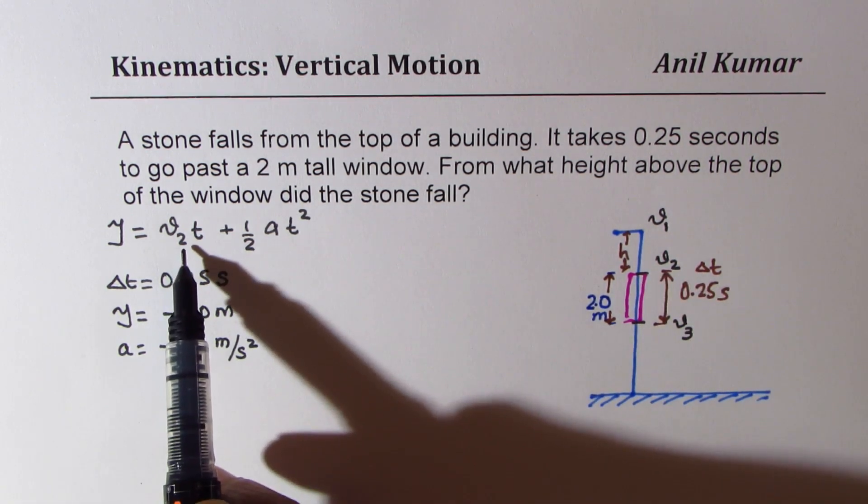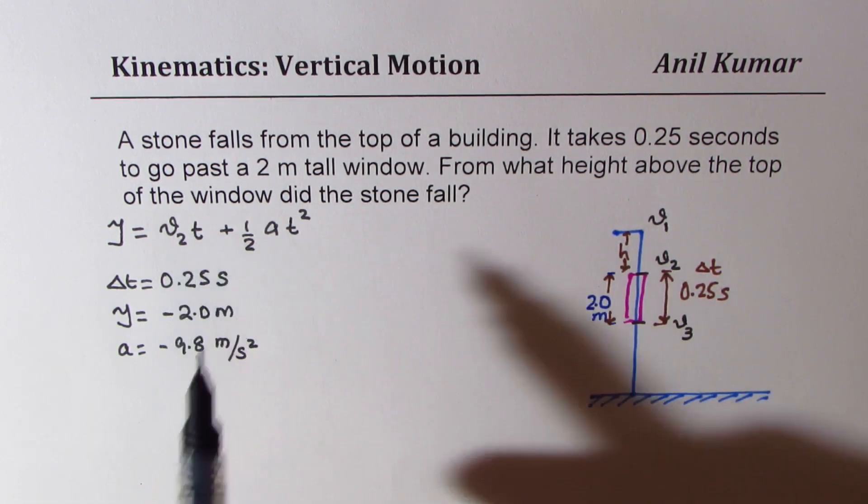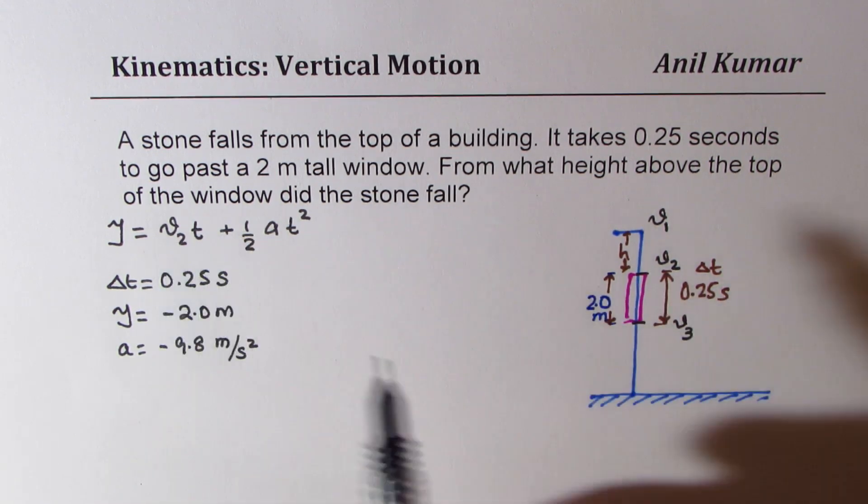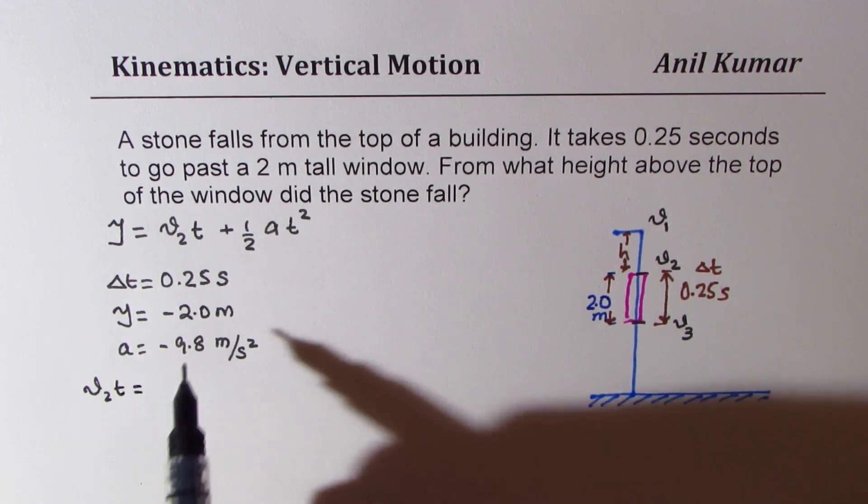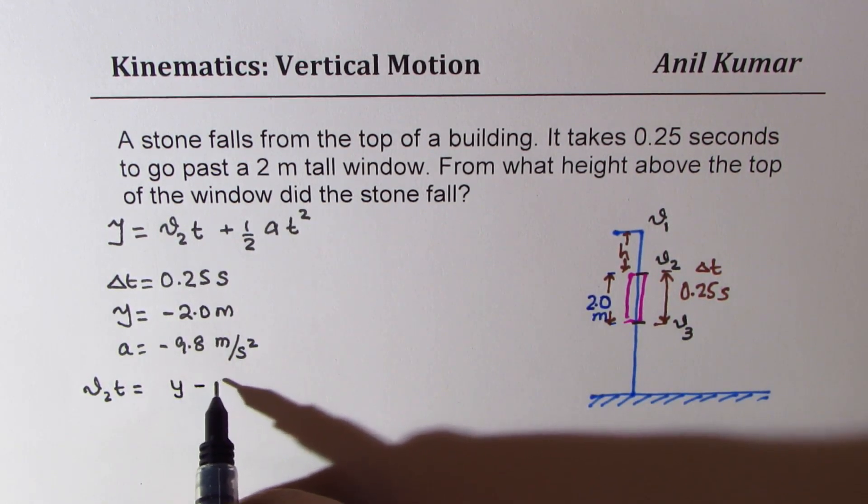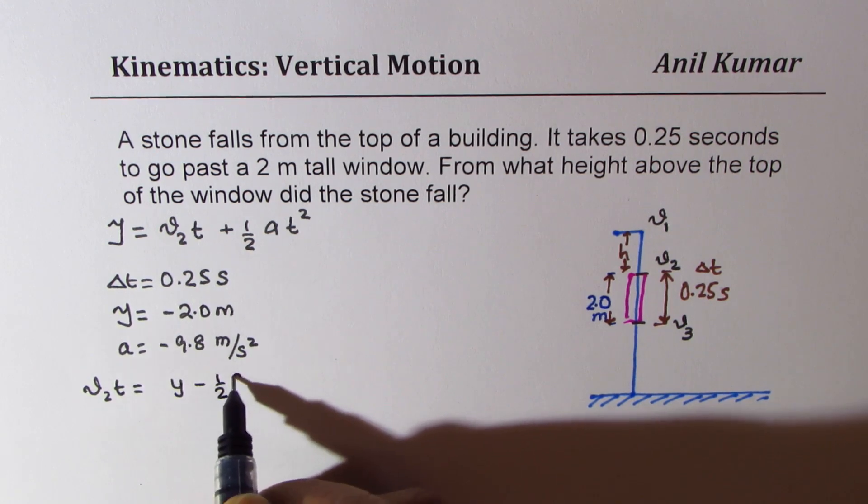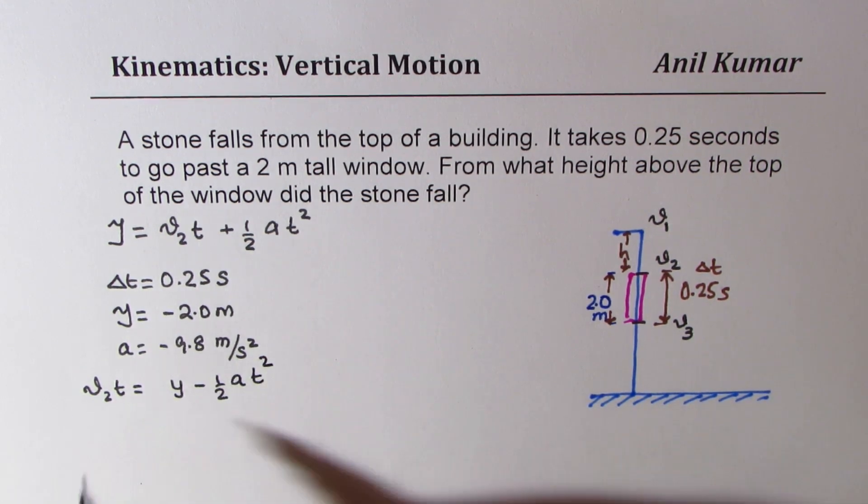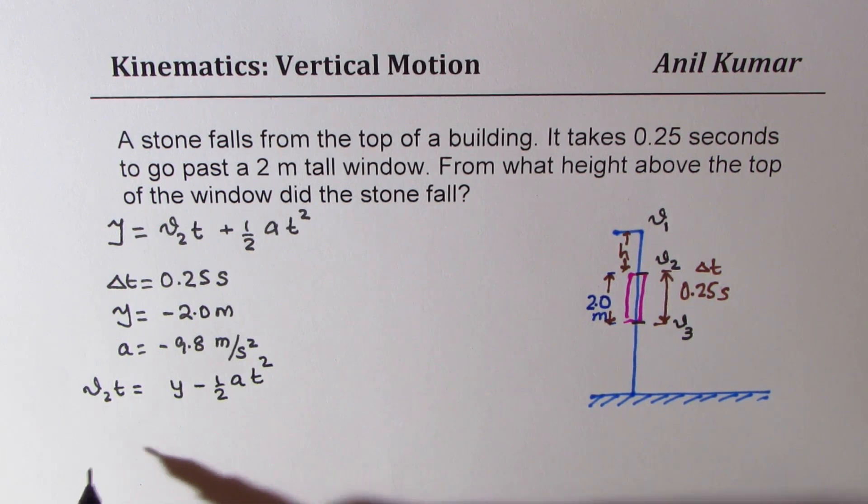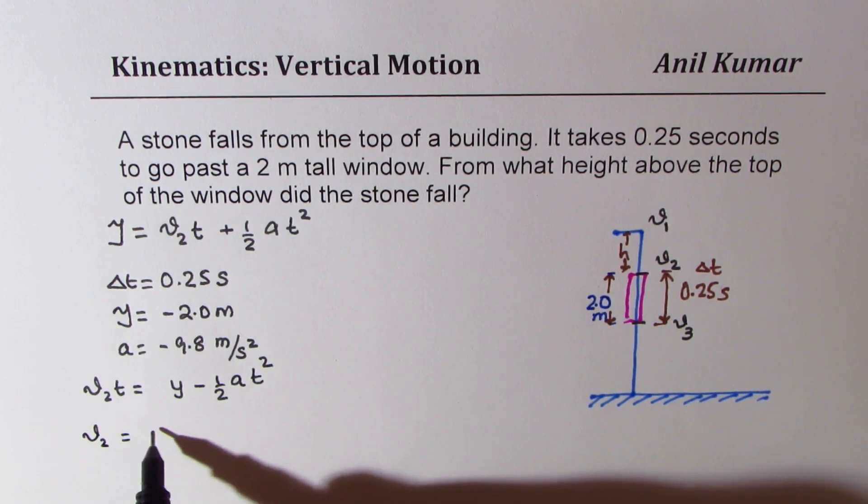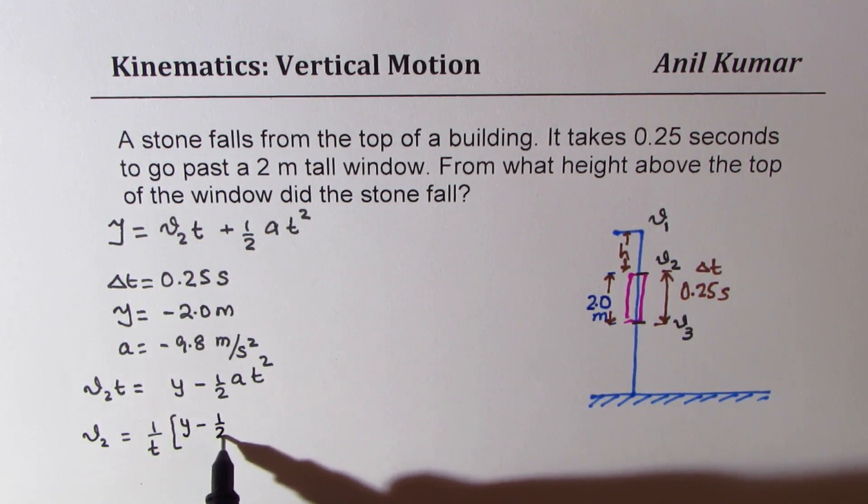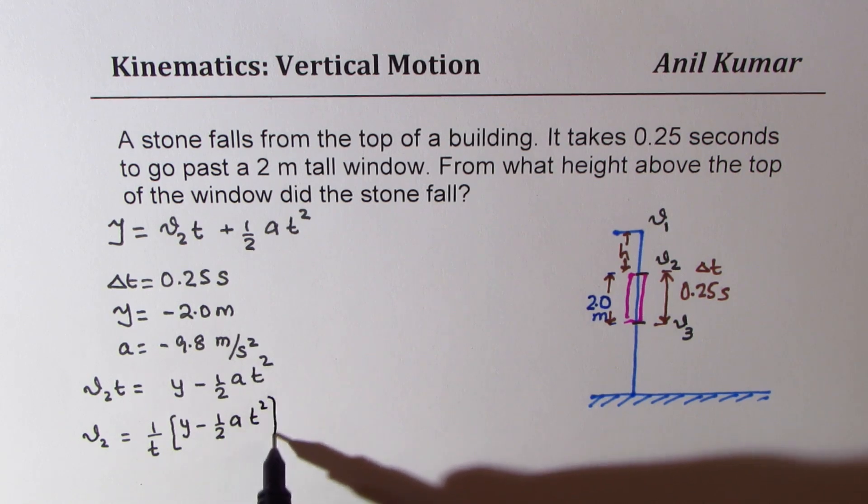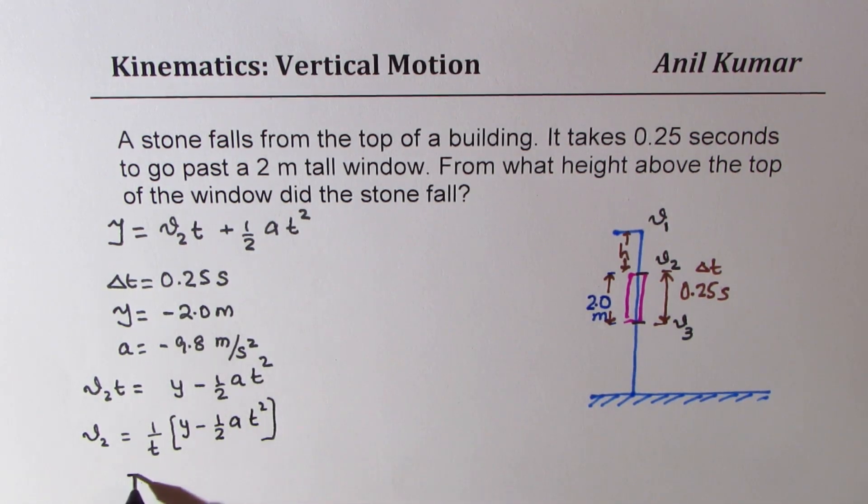We know all the values. We can find velocity at the top of our window from this formula. If I substitute these values and rearrange, we get v2 equals 1 over t times y minus half a*t^2.